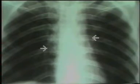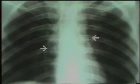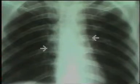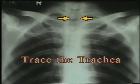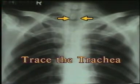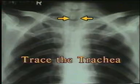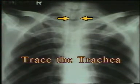Then study the hila, represented by the shadows of the hilar vessels. The left hilum is normally at a slightly higher level than the right. Lastly, identify the course of the trachea up to the carina for any deviation.